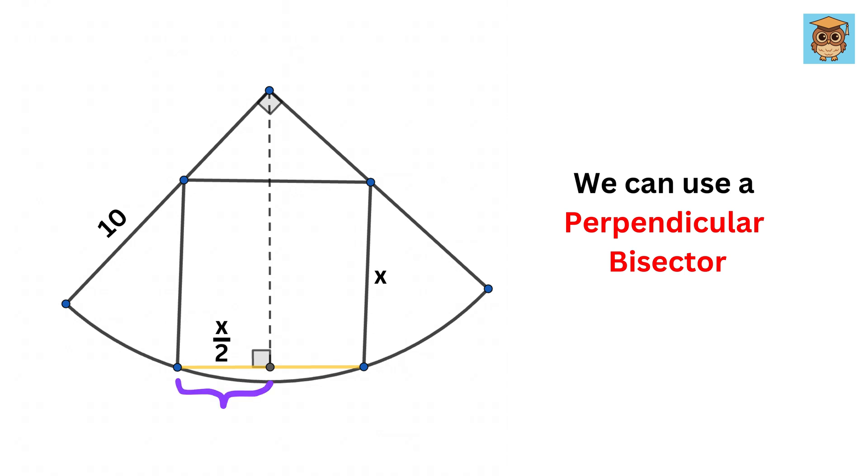Therefore, this piece will be X over 2. This piece is the same as the side of the square, that is X.